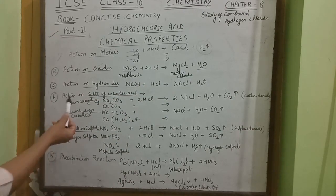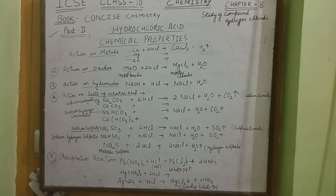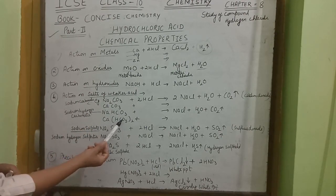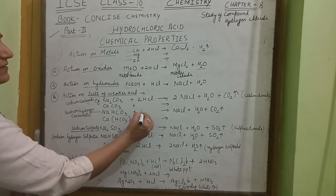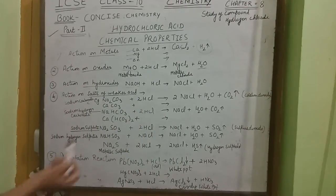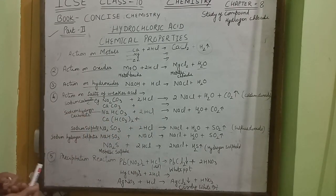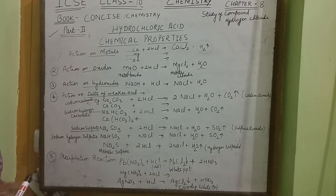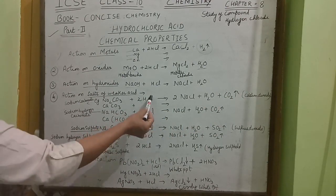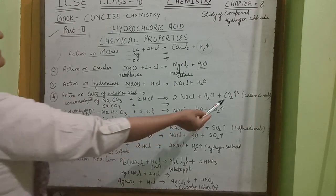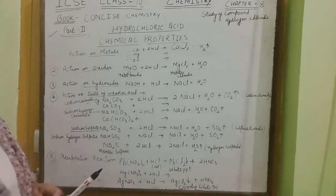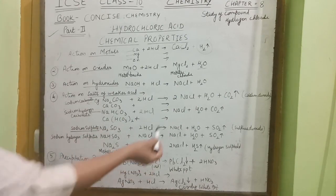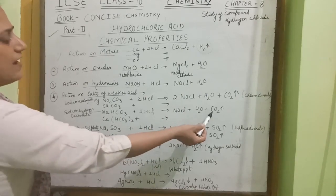The action of hydrochloric acid on salts of weaker acids, such as sodium carbonate, calcium carbonate, sodium hydrogen carbonate, and calcium hydrogen carbonate: when hydrochloric acid is added to a metallic carbonate, it forms metallic chloride, water, and carbon dioxide gas is evolved. So if the question asks which gas is evolved when hydrochloric acid is added to a metallic carbonate, the answer is carbon dioxide.